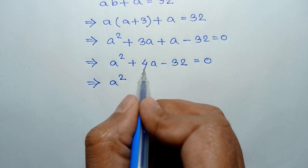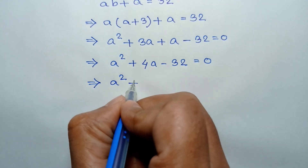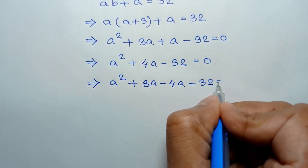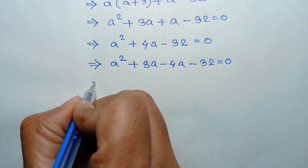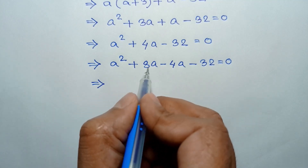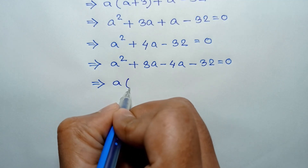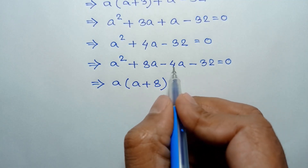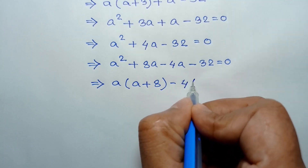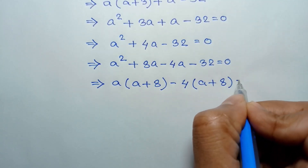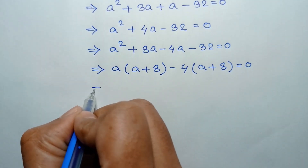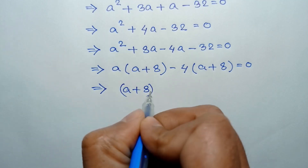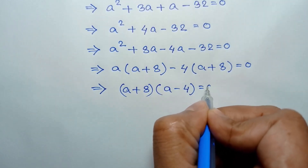Breaking 4A into 8A minus 4A, we have A squared plus 8A minus 4A minus 32 is equal to 0. Taking common A from the first two terms: A times (A plus 8), and taking common negative 4 from the last two terms: negative 4 times (A plus 8), is equal to 0. Taking common (A plus 8), we can write (A plus 8)(A minus 4) is equal to 0.